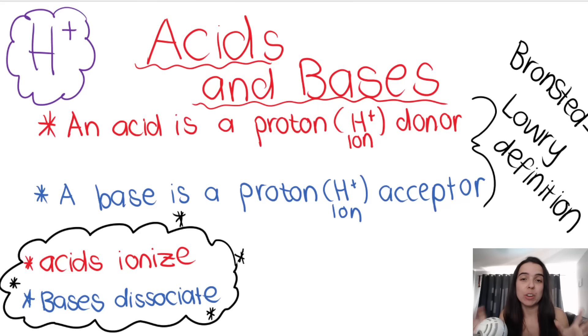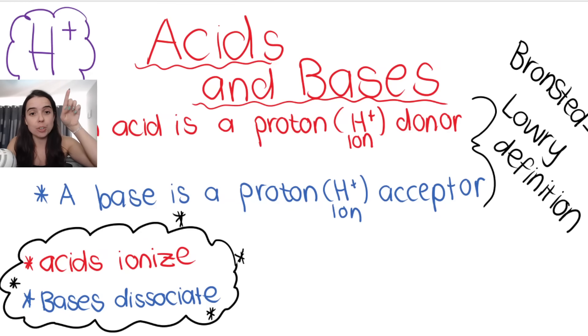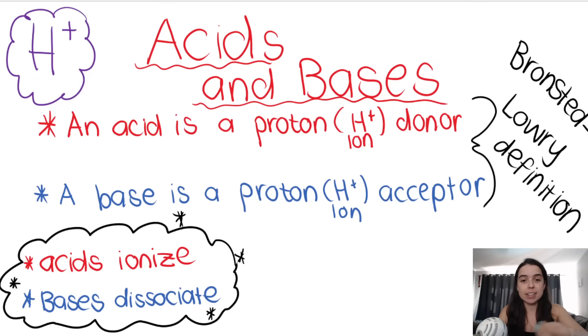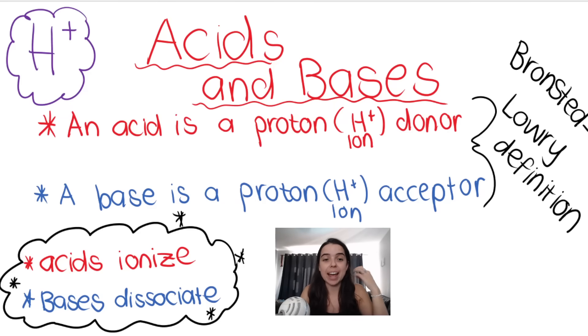One of the most important things we learned in grade 11 was how to define an acid and a base. I've given you the Bronsted-Lowry or Lowry-Bronsted definitions here. There is another definition you need to know which I'll go over in a second, but this is the more commonly accepted one. An acid is a proton donor, meaning an H+ ion. A base is a proton acceptor, so it accepts the H+.